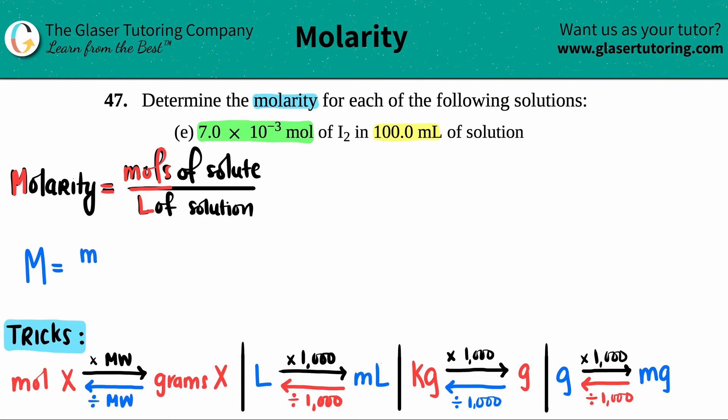Now let's see, did they give us any of the information already? Well, yeah, they gave us the mole value, right? So we know that the top number when we're solving is 7.0 times 10 to the negative 3 moles. But did they give us a liter? No, they didn't. They gave us a milliliter.